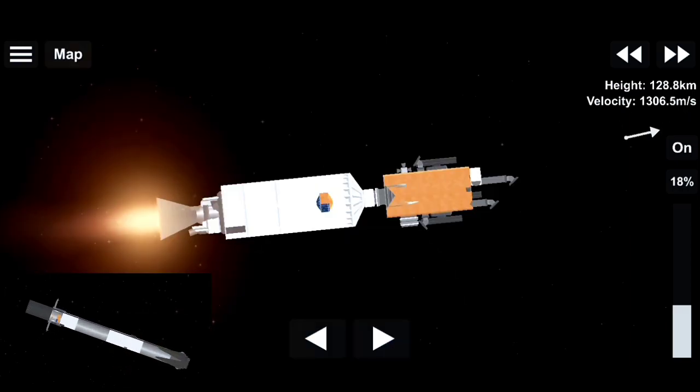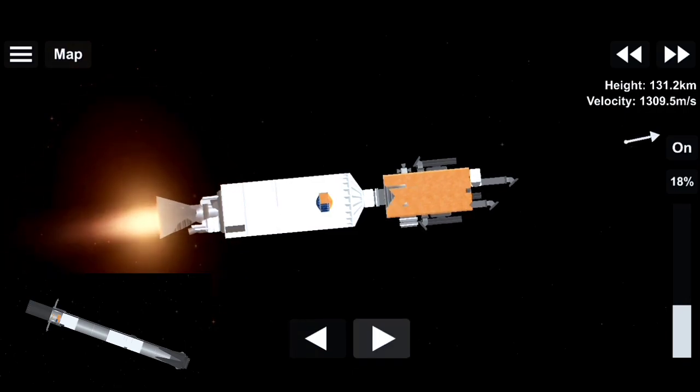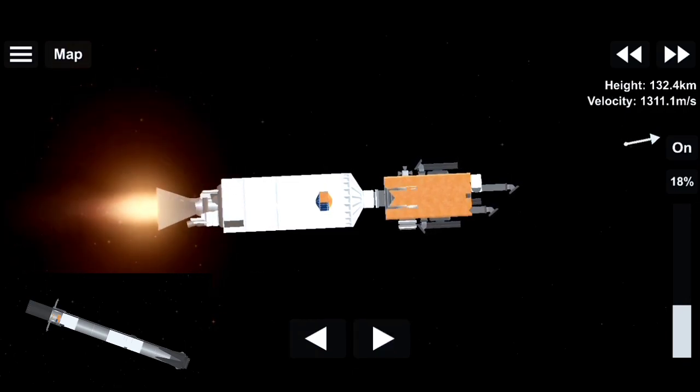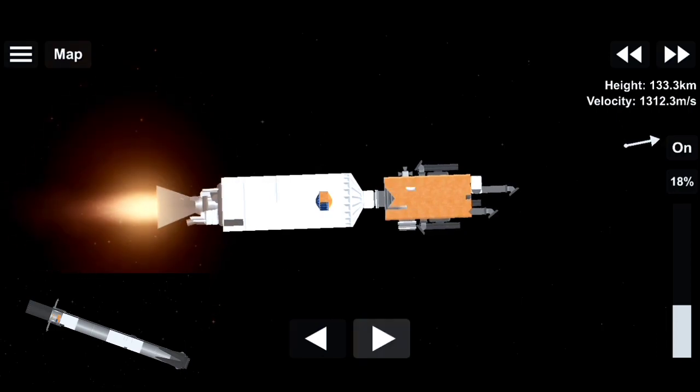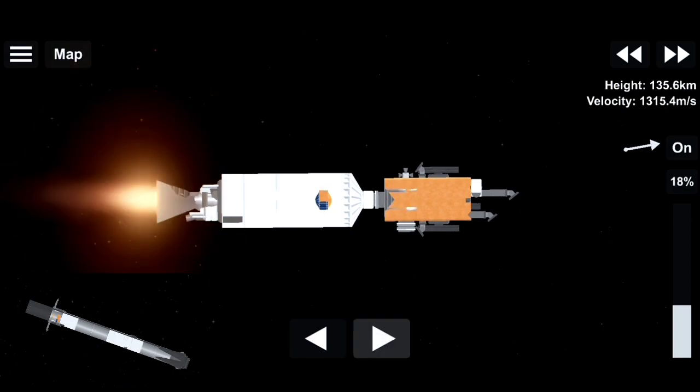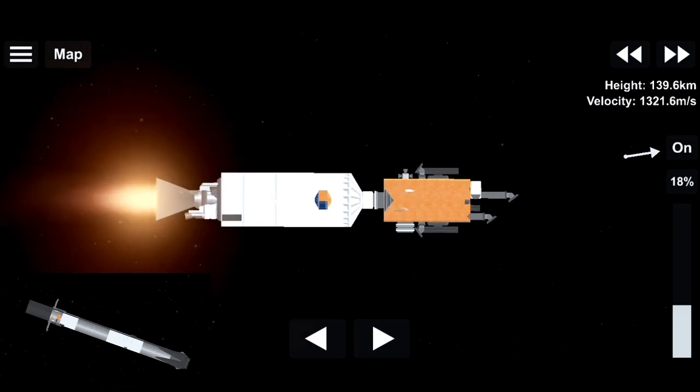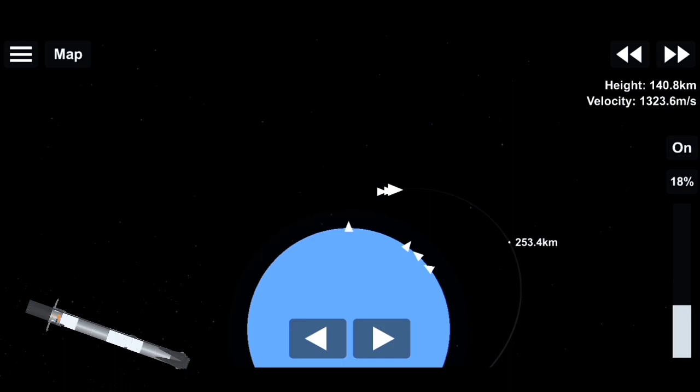For those of you just joining us, we had a successful liftoff of our Falcon 9 rocket at 5:30 p.m. Eastern time from Cape Canaveral. On the right hand side of your screen, our second stage, its engine is glowing as we continue to take the ANASYS-2 satellite payload to its desired orbit. On the left hand side, our first stage, we're beginning our recovery attempt on our drone ship out in the Atlantic Ocean.